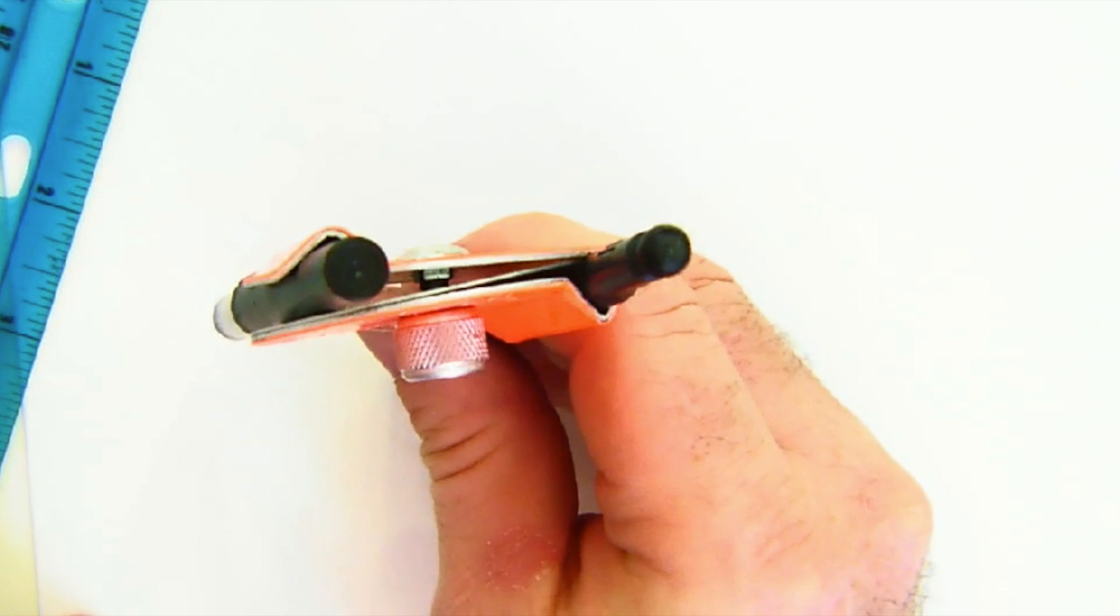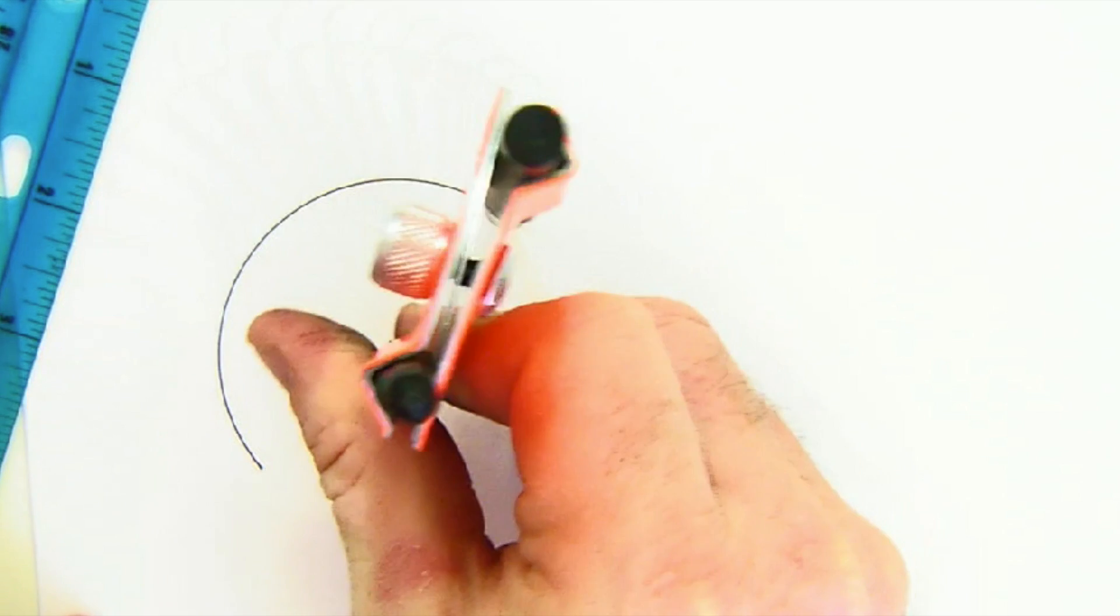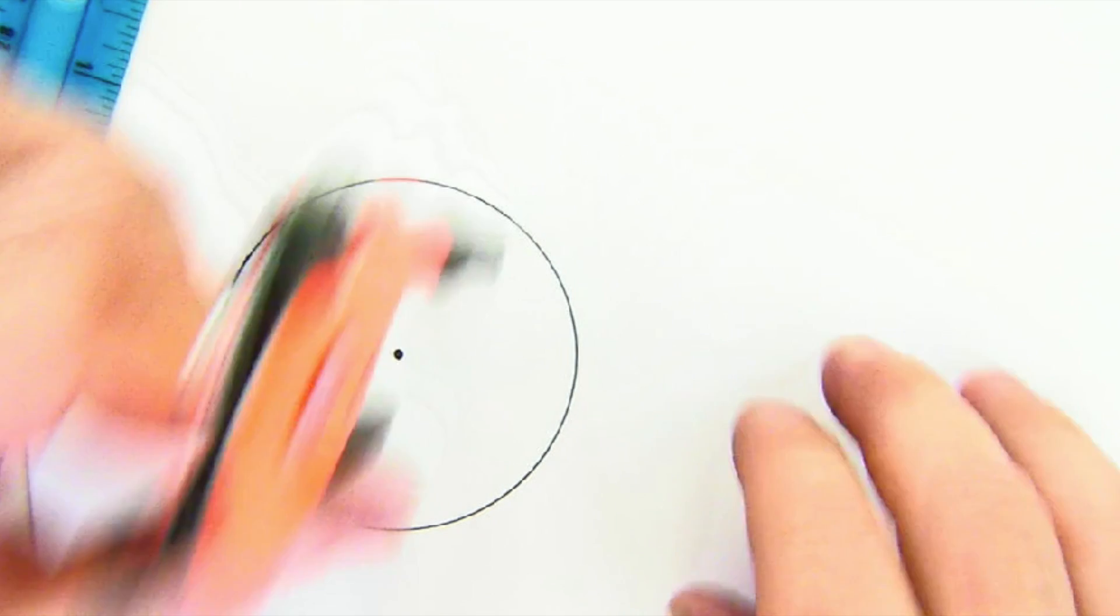We're going to construct an inscribed square, and so you begin that by creating the circle we're going to inscribe it into.